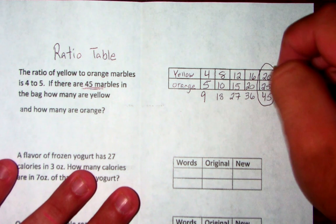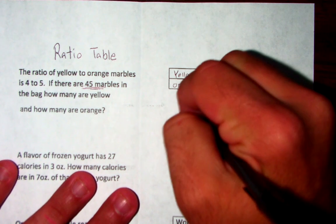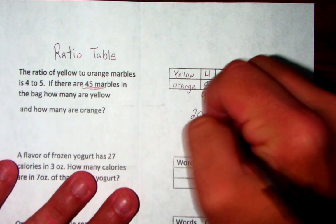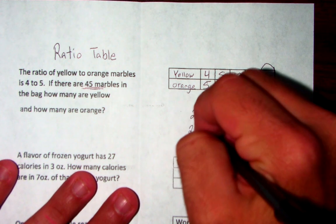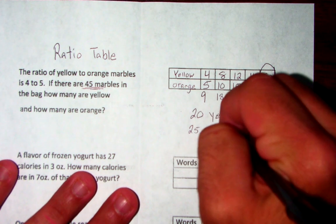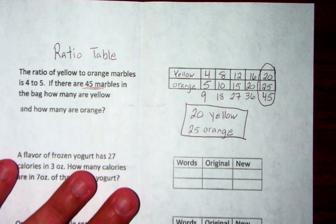So we're looking for the one with a total of 45 marbles, which is this one right here. So let's go ahead and answer the question. How many are yellow? 20 yellow and 25 orange marbles. And there's your answer and there's the first strategy using the ratio table.